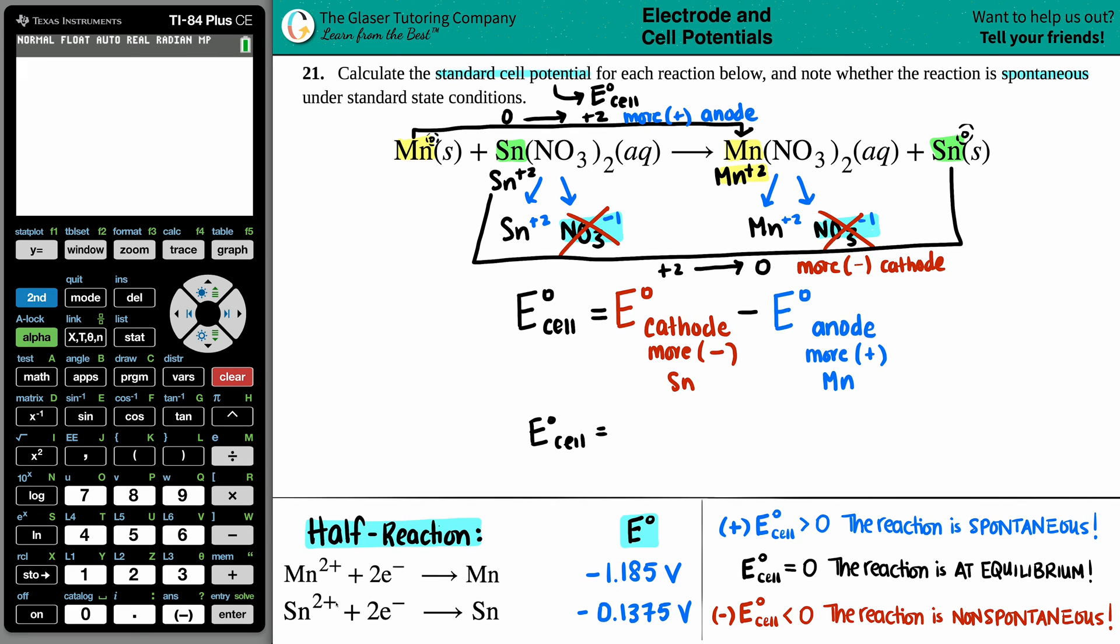So I'm literally just going to take my Sn value as this and plug it in, negative 0.1375. And I'm going to subtract that with the other half reaction value, 1.185. Notice how if there were any coefficients here, I don't care. It's whatever those values are. It's that simple. I know, right? Maybe the one time that chemistry is simple.